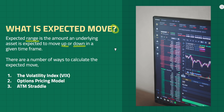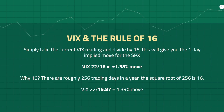The expected move is typically based on historical data or implied volatility, and there are a number of ways to calculate it. In this video we will look at three methods: using the implied volatility index (the VIX), the options pricing model (Black-Scholes), and the at-the-money straddle.